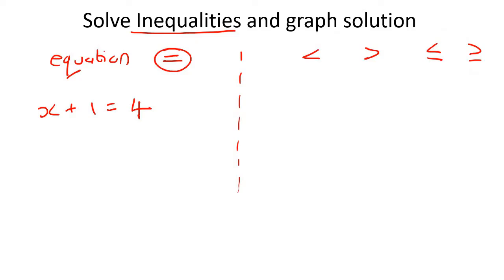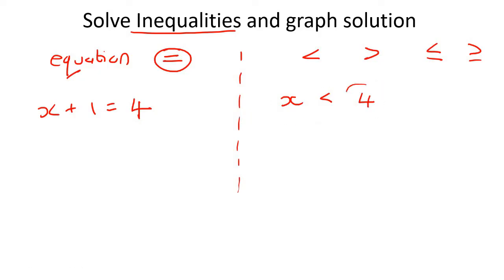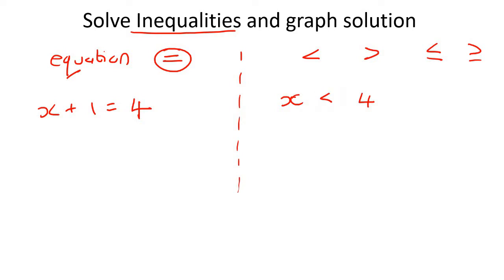Now we need to make sure that you understand what each symbol means. If I show you a symbol, always start with the x — never start with the number. So does a given symbol say that x is smaller than 4, or does it say that x is bigger than 4? You need to get used to this, but I'll show you a lot of examples. This means that x is smaller than 4.